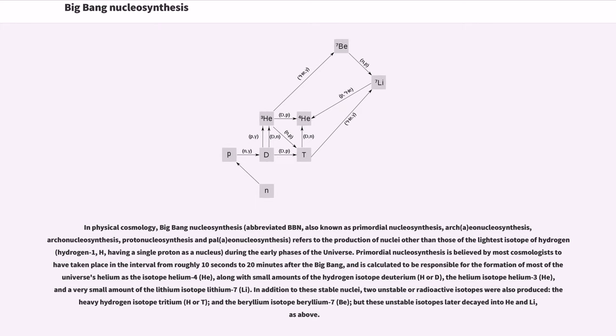Primordial nucleosynthesis is believed by most cosmologists to have taken place in the interval from roughly 10 seconds to 20 minutes after the Big Bang, and is calculated to be responsible for the formation of most of the universe's helium as the isotope helium-4, along with small amounts of the hydrogen isotope deuterium, the helium isotope helium-3, and a very small amount of the lithium isotope lithium-7.